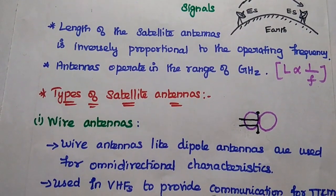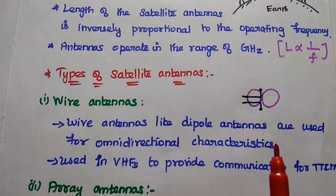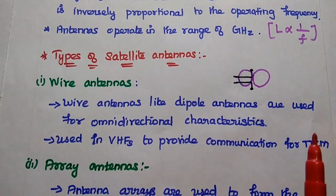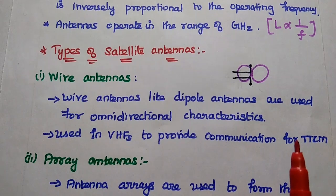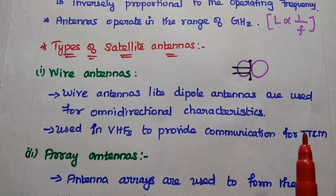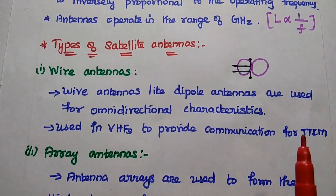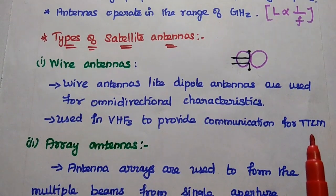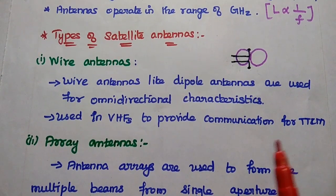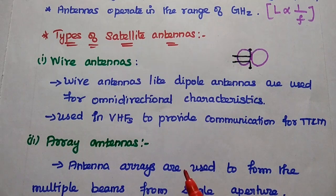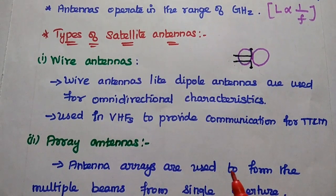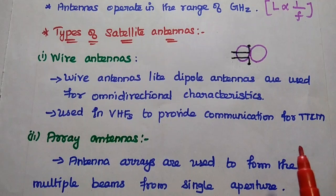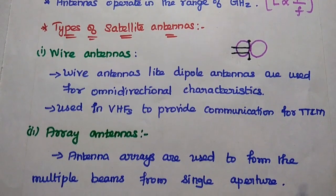Next, the types of satellite antennas. The first type is wired antennas — specifically monopole and dipole antennas. Dipole antennas are mainly used for omnidirectional characteristics, which cover the maximum area. They are widely used in very high frequency ranges to provide communication for the telemetry, tracking, and command subsystem.